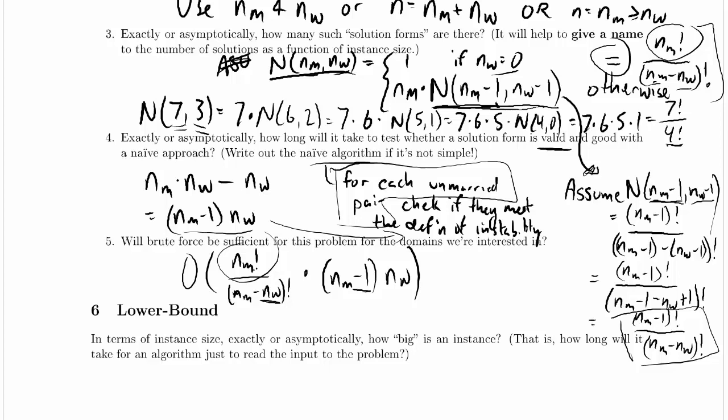On the other hand, if NW is really, really small, let's say we fix NW to be 5 or some other small constant, then in fact this is going to be NM times NM minus 1 times NM minus 2 times NM minus 3 times NM minus 4. So that'll be NM to the fifth, and maybe another factor of NM thrown in here, NM to the sixth. That might be too expensive, or maybe it's not.